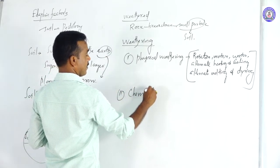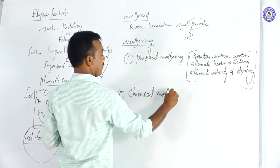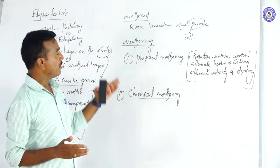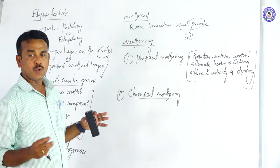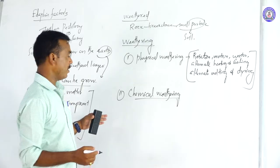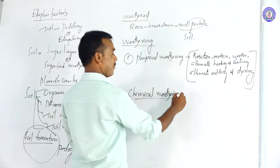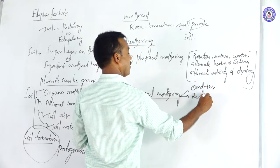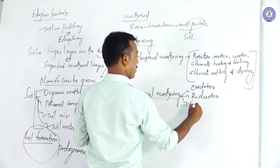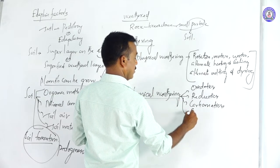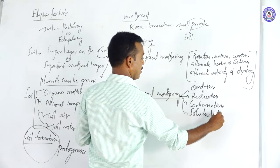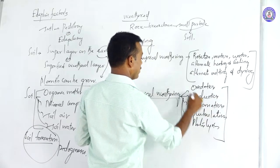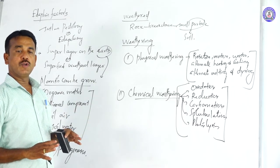Chemical weathering is always accompanied with various chemical processes. Through these chemical processes, rock particles are broken down and converted into small particles. The processes involved in chemical weathering include oxidation, reduction, carbonation, solubilization, and hydrolysis.